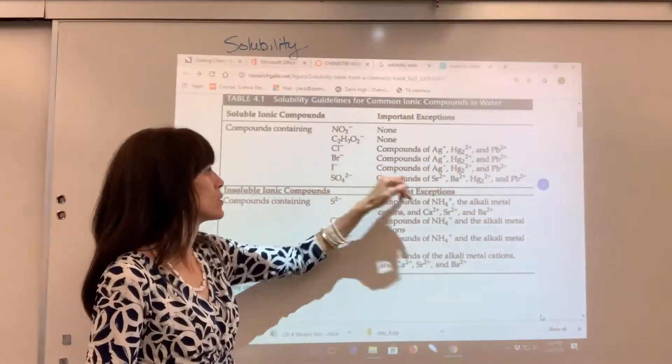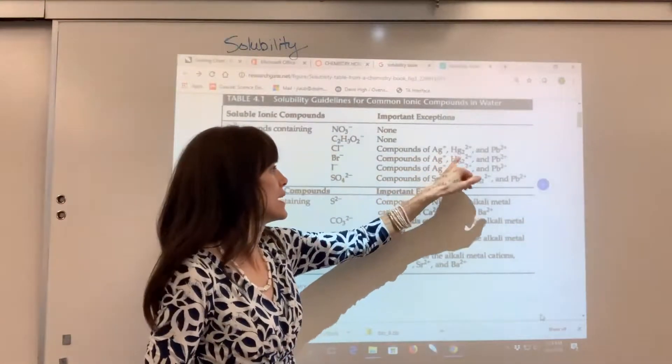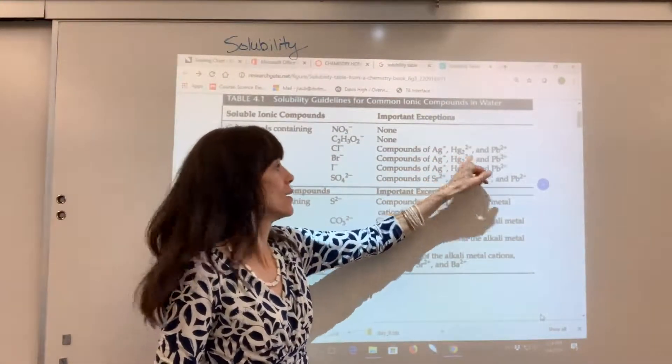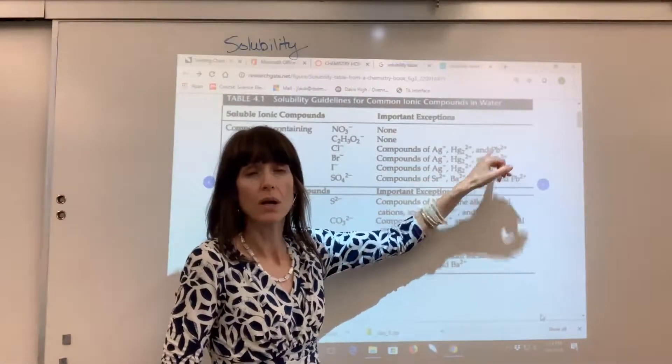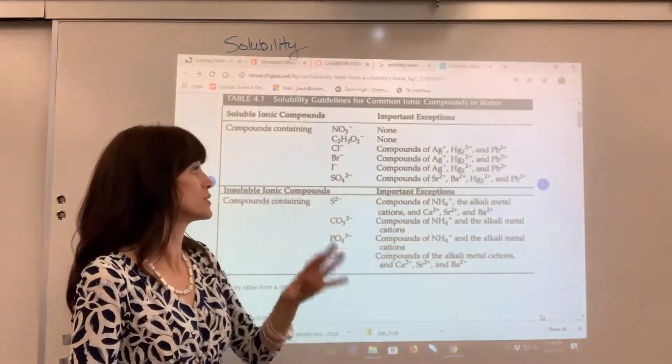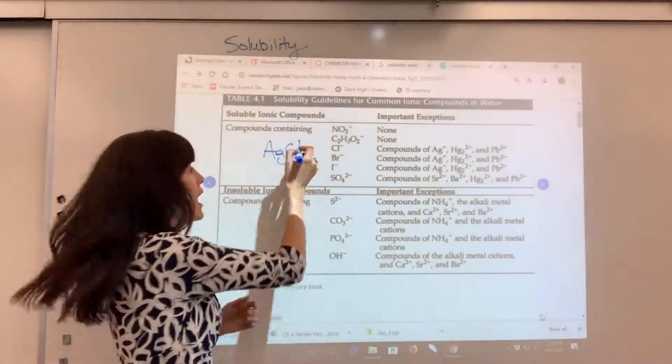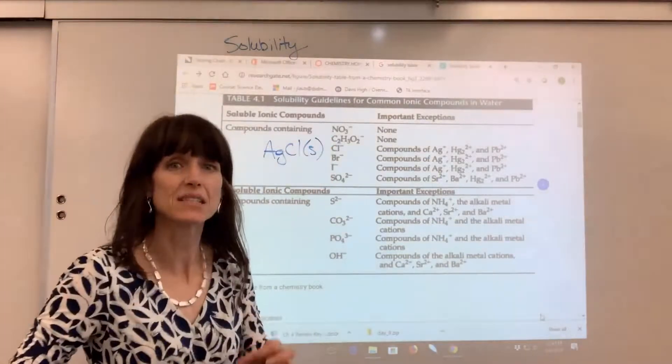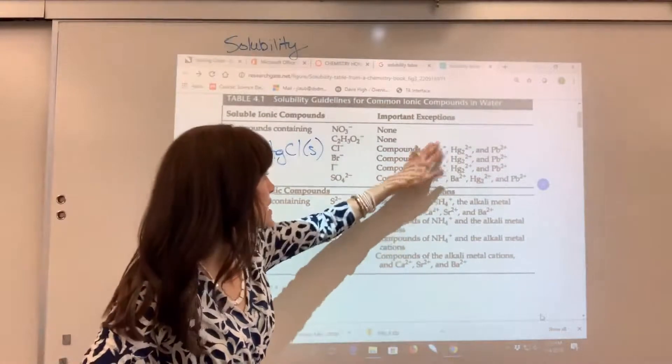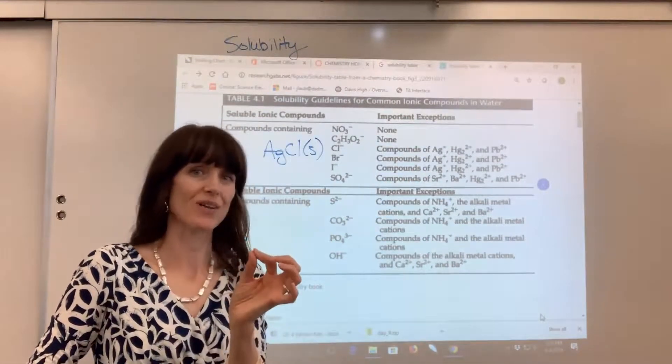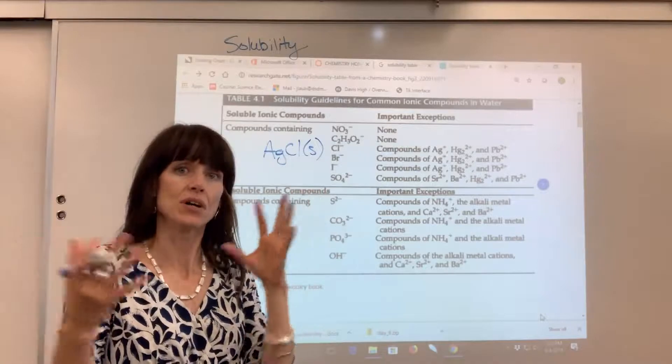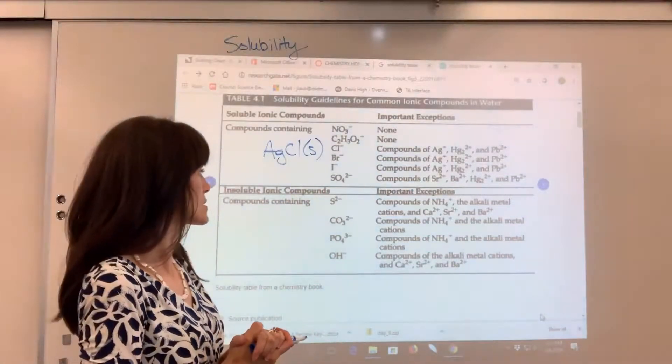However, chlorine, if you put silver with it, a mercury one or a lead two, combine that with a chlorine. So, for example, silver chloride, I would say that's insoluble. And if it's insoluble, an exception, that means it's a solid. It doesn't dissolve when it's put in an aqueous solution.